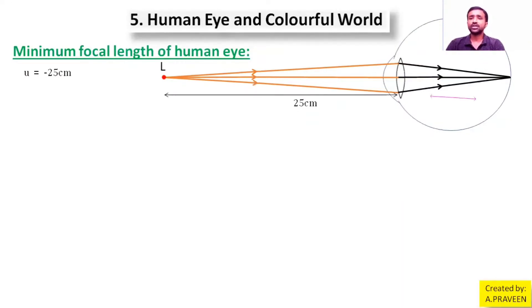We can take it as image distance, that is v = 2.50 centimeters. So I know object distance and I know image distance. Here the lens focal length will be adjusted by the ciliary muscles. f = minimum focal length = f_min. Then find out f_min is equal to what.